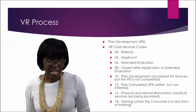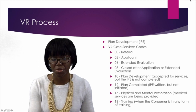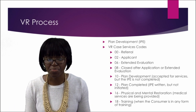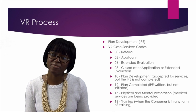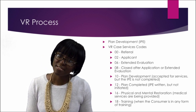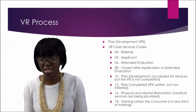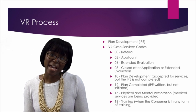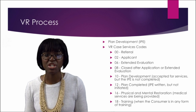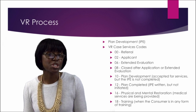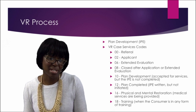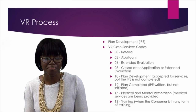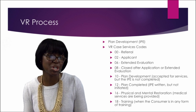Extended evaluation, status 06, is not always used during the time before determining eligibility. It's saying you need some additional information before you can determine if someone is eligible. Status 08 is a closure status used to denote it's closed after application or extended evaluation, meaning there was no further work that needed to be done or you weren't able to do anything with the client application, so you close them at 08.